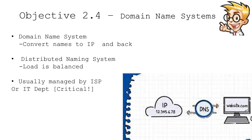DNS is a distributed naming system, which means that you might have many different DNS servers in your environment and outside of your organization. You're probably communicating with many other DNS servers as well. This conversion process between a fully qualified domain name and an IP address is critical for the entire communications process. It's usually managed by your local IT department or an internet service provider, and they usually have multiple DNS servers to ensure that this service is always available to its users.